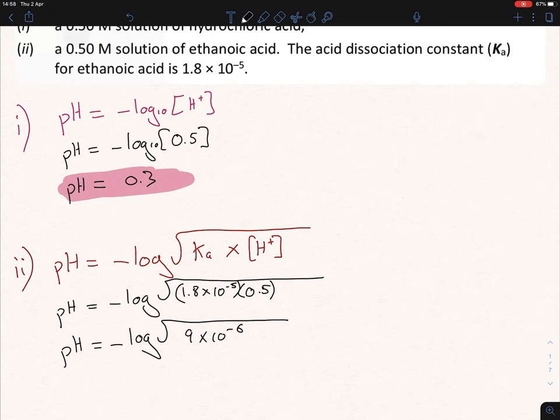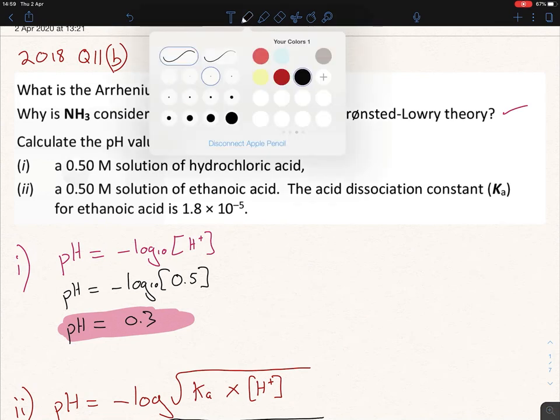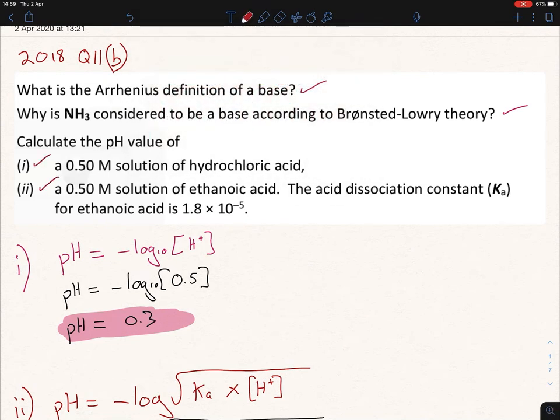And you're going to get 9 times 10 to the minus 6. Now, you could throw all this into the calculator if you want. So minus log, square root, and then do your brackets, 9 times 10 to the yx minus 6. Close your brackets, and you're going to get your pH, if you do that correctly, to be 2.52. So you can see there there's a difference between the pHs. One is 0.3, and the other is 2.52. So obviously, the 0.3 is a lot stronger. So, part 2 is your ethanoic acid there, which we have answered now. We have part (i) done, and we have part (ii) done here. And that's it.